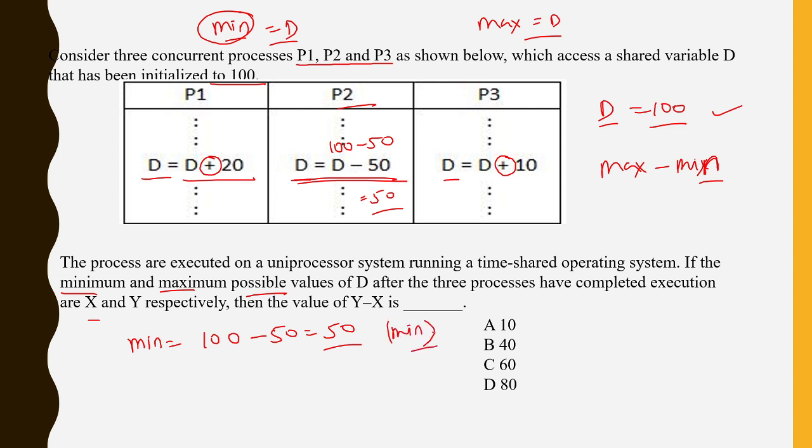Because after that whatever I am doing, P1, P3, whatever possibility, all are increasing. So it's not mandatory to think that when P2 is doing, P1 is doing, after that P3 is doing. No. What is my minimum value? Minimum value is 50, that is possible.